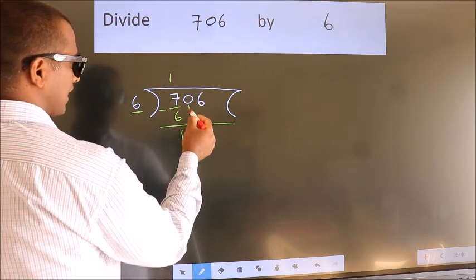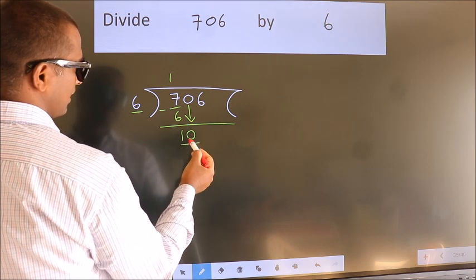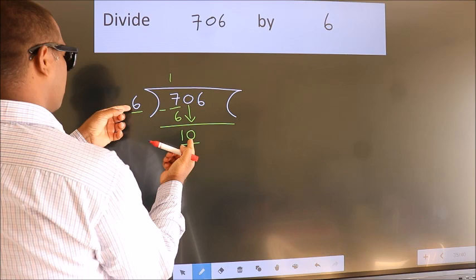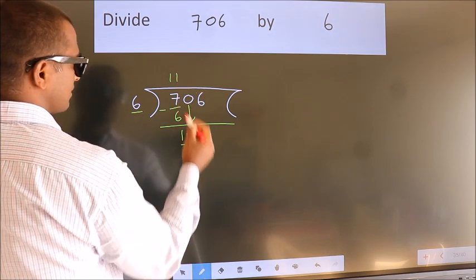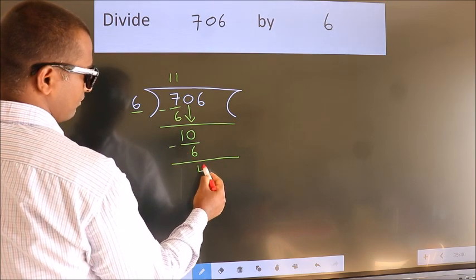After this, bring down the beside number, so 0 down, so 10. A number close to 10 in 6 table is 6 once 6. Now we subtract, we get 4.